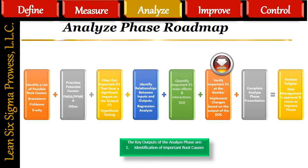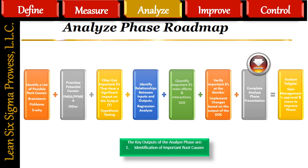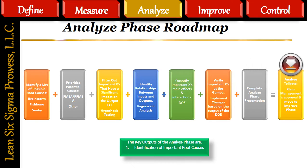Step 6: Verify important Xs at the Gemba. Implement changes based on the output of the Design of Experiments. For important main effects, implement changes in the process. Perform trial runs to verify changes are effective and do not have an adverse impact on the process. Step 7: Complete the Analyze phase presentation. Step 8: Analyze Tollgate — gain management's approval and move to the Improve phase. Note: the Analyze phase tends to be the most difficult for students with little to no knowledge of statistics. We will spend a considerable amount of time during the Analyze phase modules learning these important tools. The key output of the Analyze phase is the identification of important root causes.